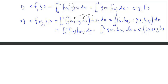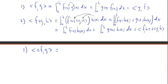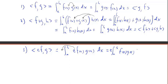Property three: the inner product of cf with g equals the integral from a to b of c times f(x) times g(x) dx. Because the integral is homogeneous, we can pull out the constant c, writing this as c times the integral of f(x)g(x) dx, which equals c times the inner product of f and g.